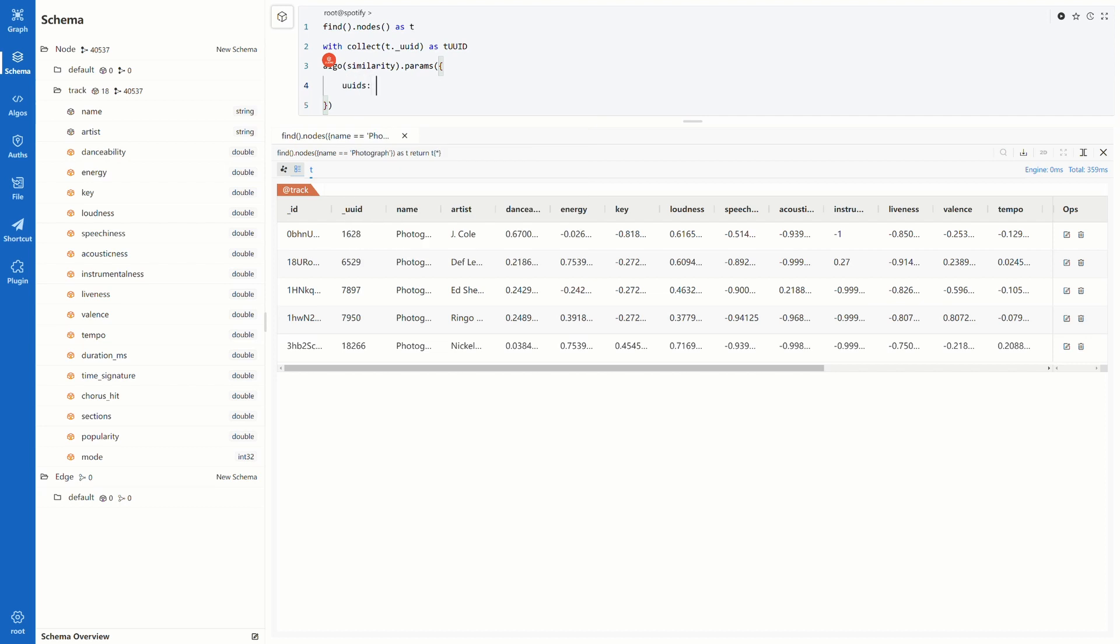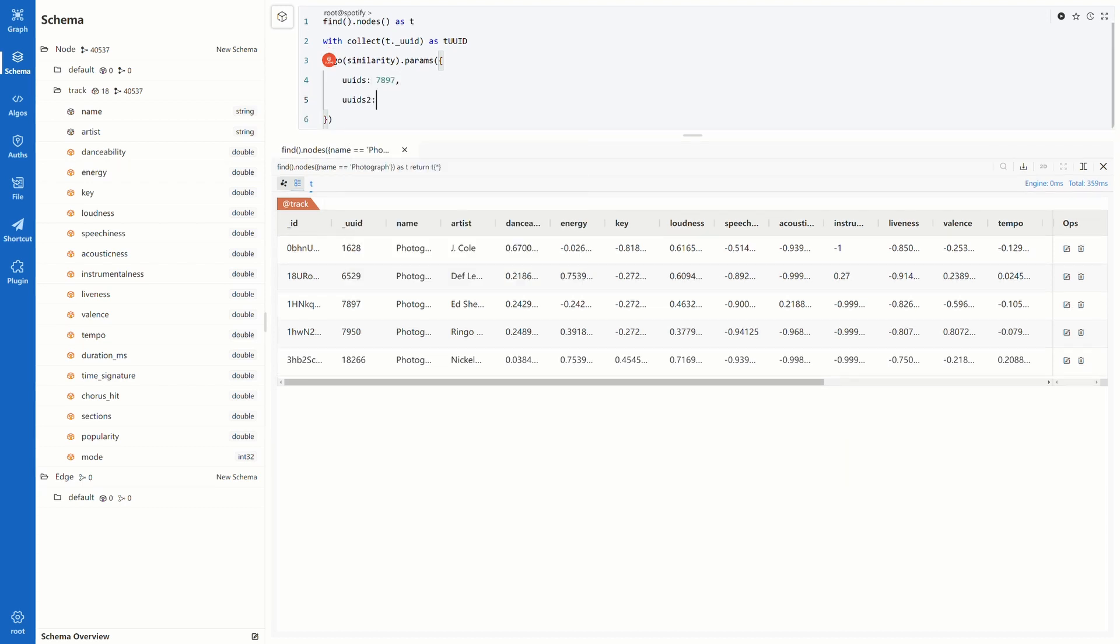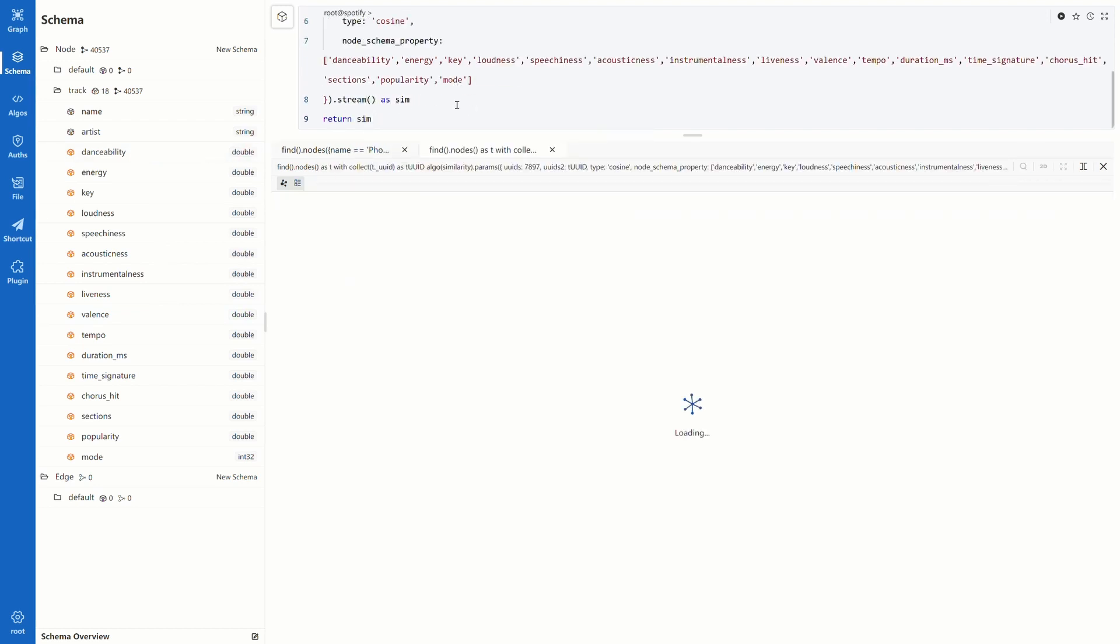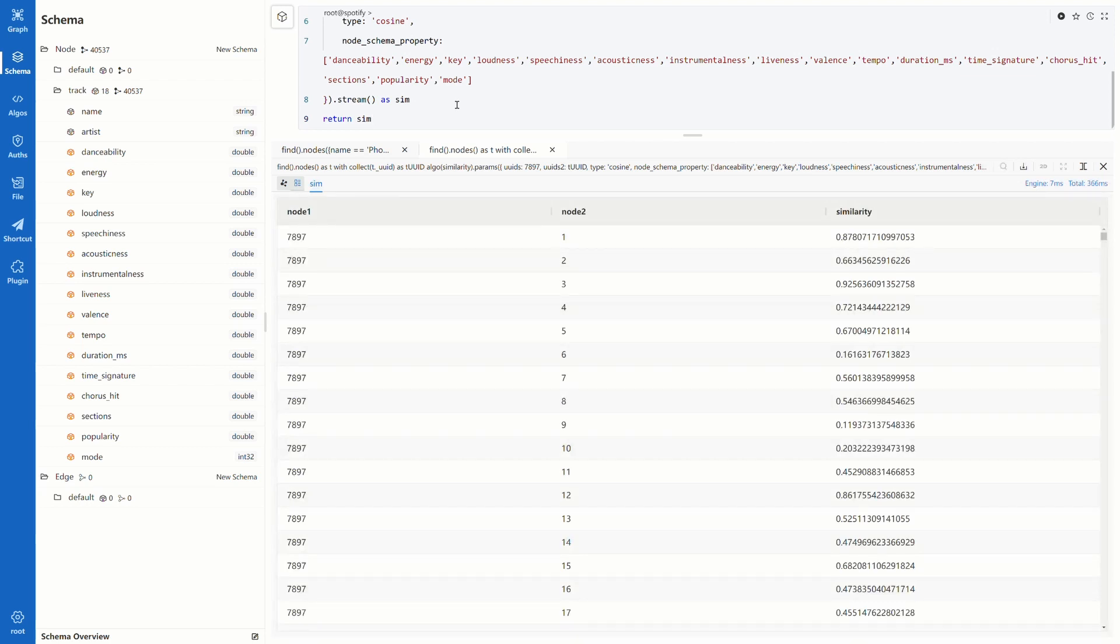In the algorithm, compare track 7897 with all tracks. The type is cosine, and we need to specify all these properties as node features. The format of the results is the same as we saw in the previous video of Jaccard similarity and overlap similarity. Each row contains node 1, node 2, and their similarity.